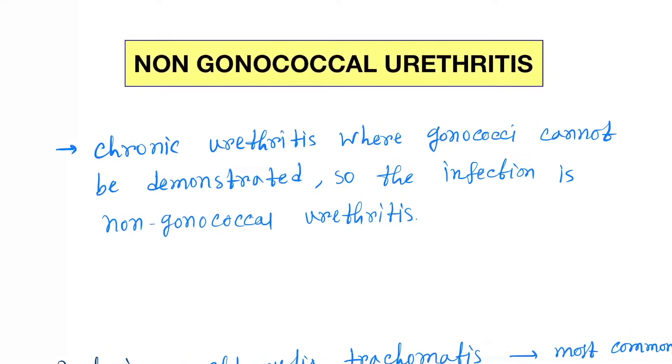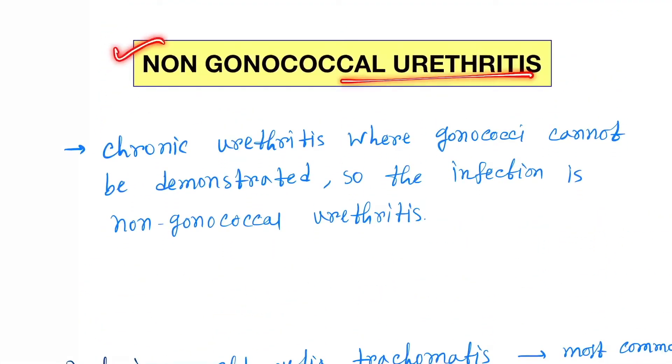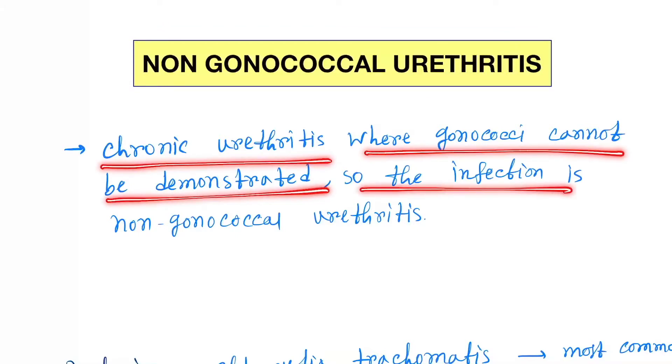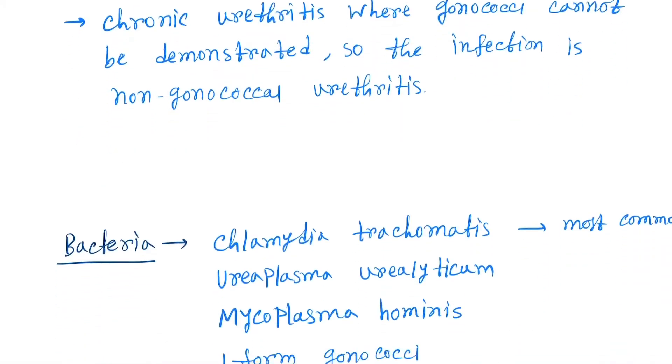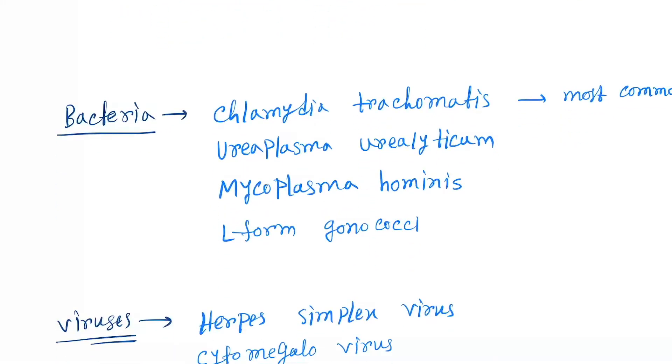what is your diagnosis? The answer is non-gonococcal urethritis. This is chronic urethritis where gonococcal cannot be demonstrated, so the infection is non-gonococcal urethritis. Now the causative agents: